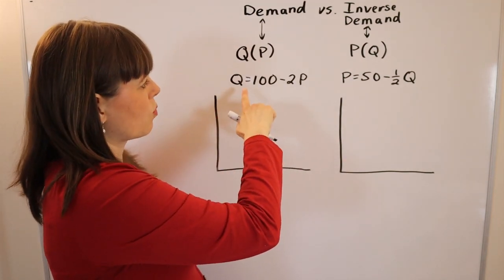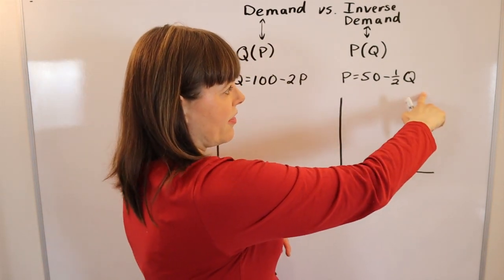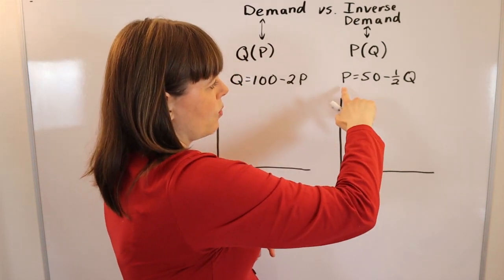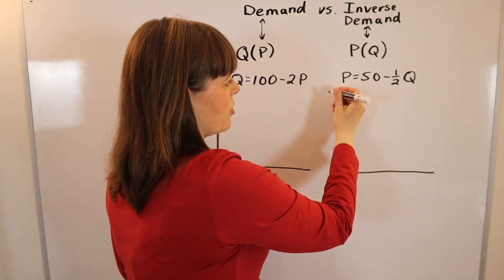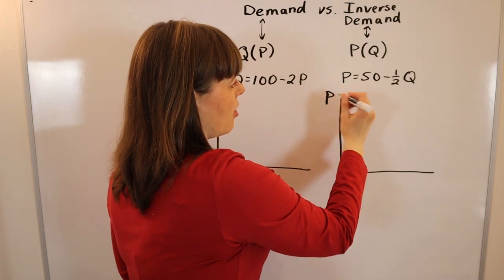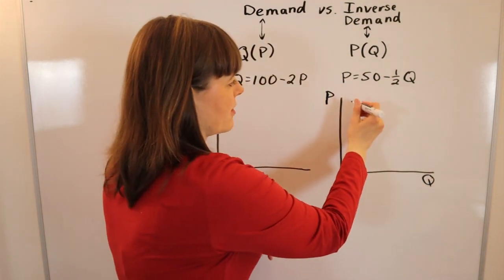But if you think about the y equals mx plus b format, if we look over here at the inverse demand function, we've got y equals mx plus b. So this is naturally going to map p onto the y axis, which is the way normal demand functions look.